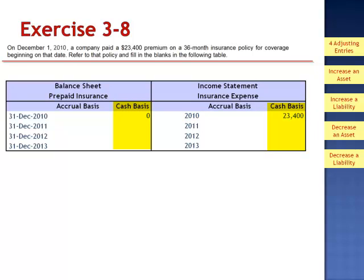Since there was no additional cash flow in the remaining years, there would never be an asset account, nor would there be any additional expense. The cash basis makes it look like it cost $23,400 to insure the company in 2010, and there was no insurance cost in 2011 through 2013. So it really isn't an accurate reflection of the cost of running their business.